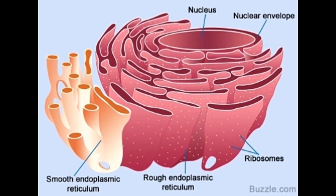The ER is basically a folded structure composed of a network of interconnected disc-like sacs and tubules. All these structures — tubules and sacs — are held in their place by the cytoskeleton. The ER remains bound by a phospholipid membrane. Inside the membrane, a fluid-filled space exists, which is known as cisternal space or lumen. The lumen or cisternal space is continuous with the pre-nuclear space, and a part of ER is also continuous with the nuclear envelope.